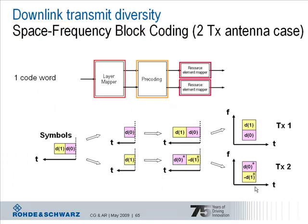To better understand the layer mapping and precoding stage, let's have a closer look at what happens in case of transmit diversity. The example shown here is for the two transmit antenna case and shows the space frequency block coding. In case of transmit diversity only one codeword can be transmitted at once because we do not have spatial multiplexing. The figure illustrates what happens to two symbols D0 and D1 of that codeword.